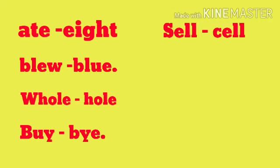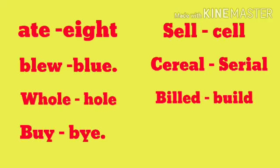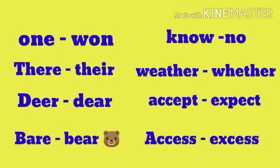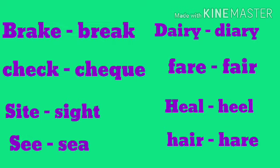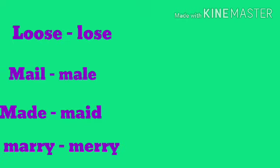I'm going to list homophone pairs now. If you don't understand the meanings, please comment below. The pairs include: eight/ate, blue/blew, whole/hole, buy/bye, sell/cell, cereal/serial, build/billed, be/bee, one/won, there/their, dear/deer, bear/bare, know/no, weather/whether, except/accept, excess/access.